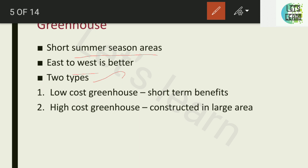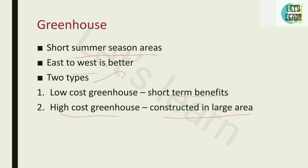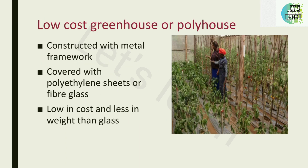Greenhouses are of two types: low-cost greenhouse and high-cost greenhouse. The low-cost greenhouse is mainly used for short-term benefits for low-income farmers, while the high-cost greenhouse is most commonly used for long-term benefits and is constructed in a large area. The low-cost greenhouse can also be called a poly house.